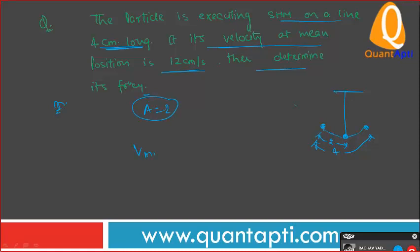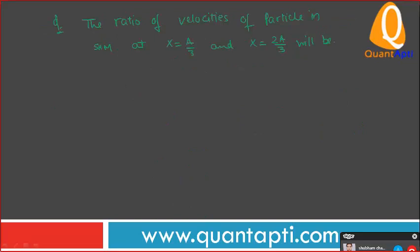A is 2. V maximum is? A omega. A is? 2. Omega is? 2 pi n. This is? Yes. Omega equals 2 pi n. Angular frequency in terms of frequency. And V maximum given is? 12. N will be? 3 upon pi hertz. 3 upon pi. Yes sir.